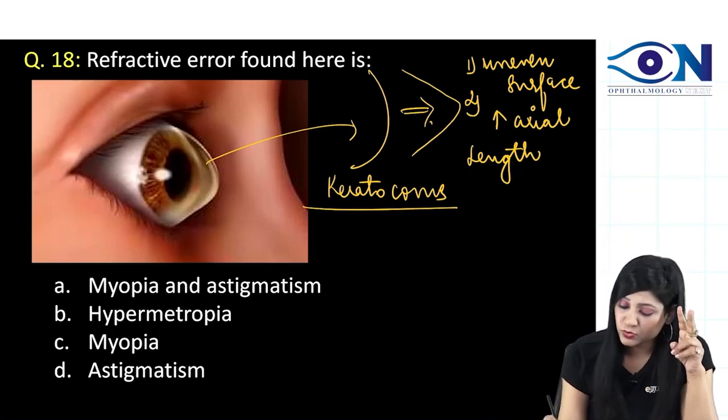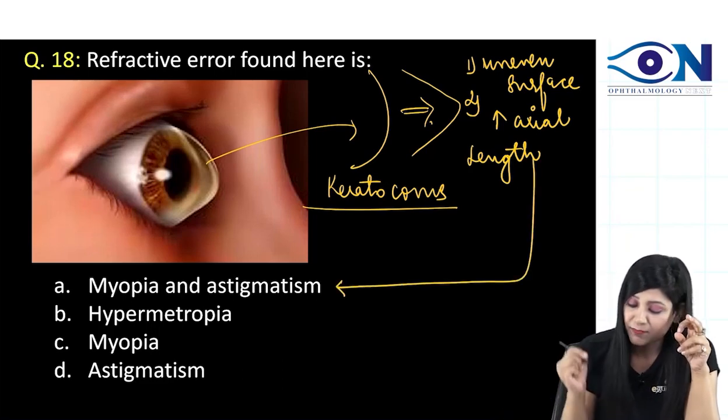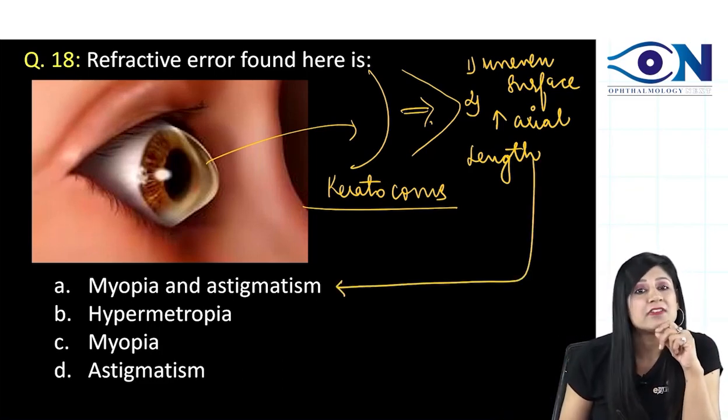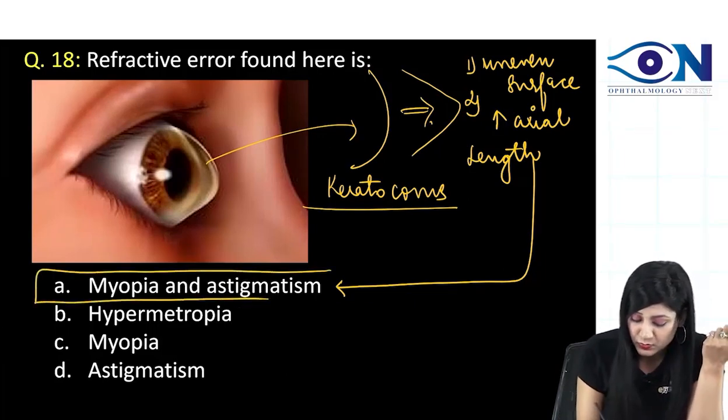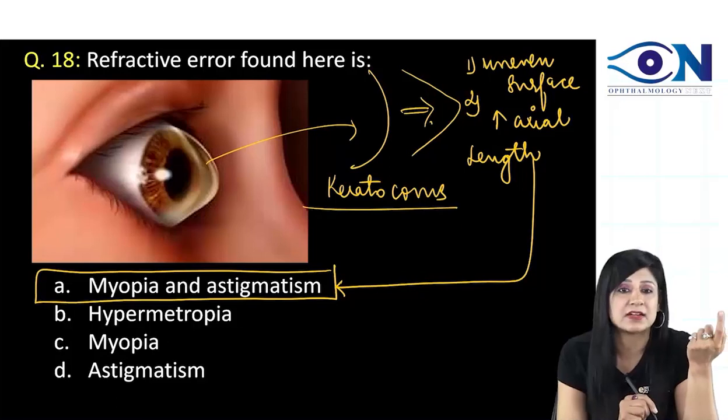Due to this, you are going to have two things. Due to the increased axial length, we will have myopia and due to the uneven surface, we are going to have astigmatism. That is why the answer to this question is myopia and astigmatism.